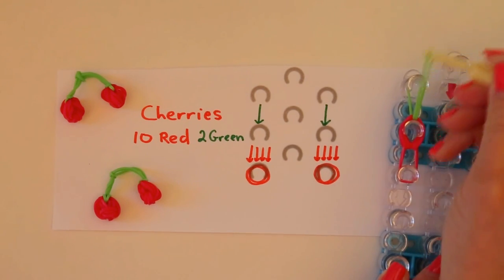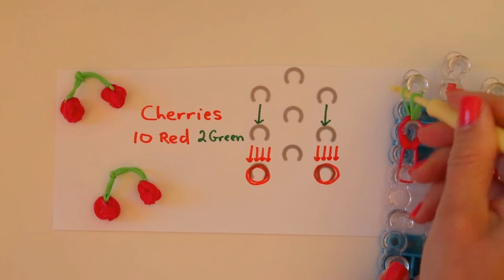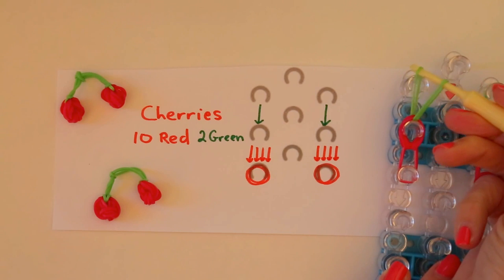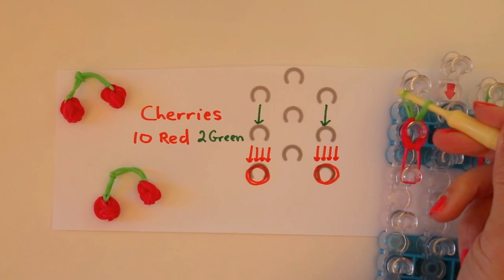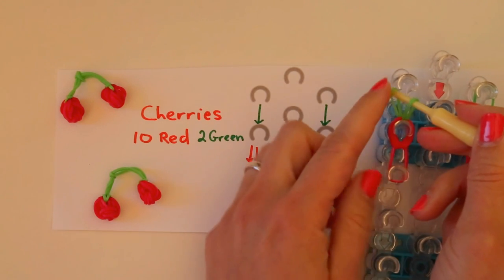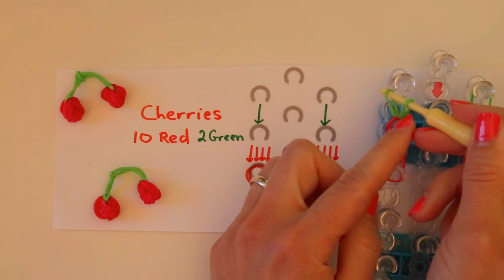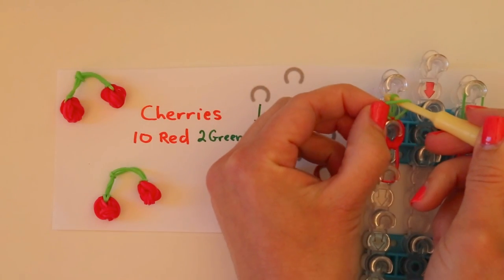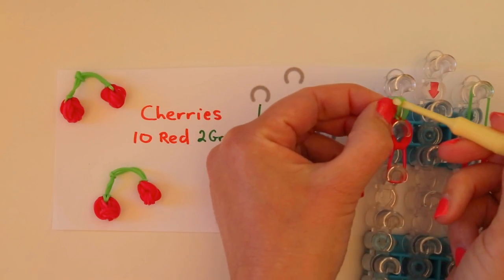And then the green which I'm gonna take both sides of onto my hook and create a slip knot pulling this side of the rubber band through this side like that.